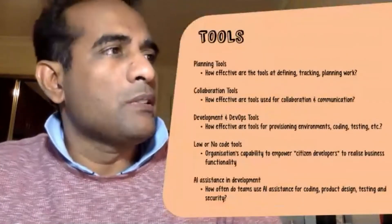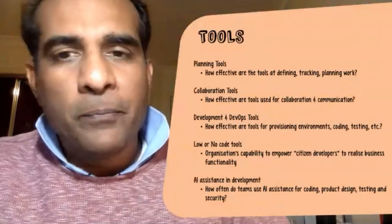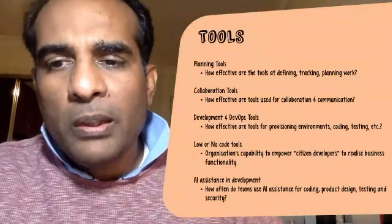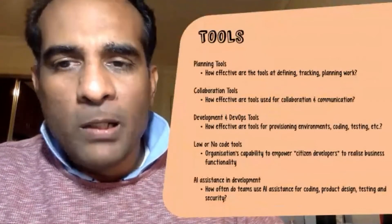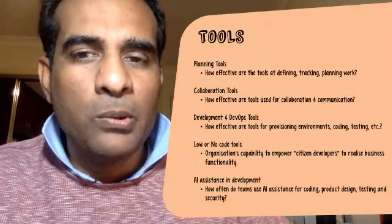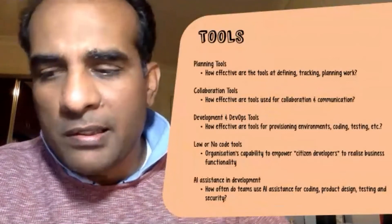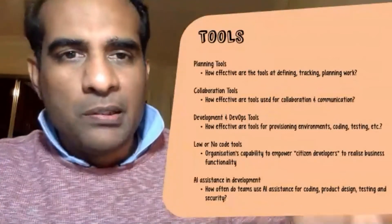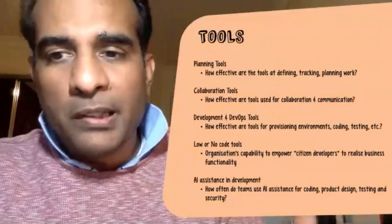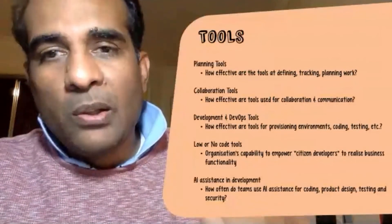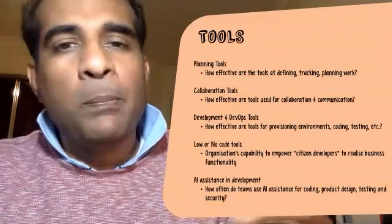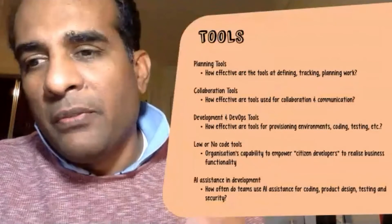One of the other important things is around tooling. How good is your developer tool chain? The developer tool chain is not just your Visual Studio or Visual Studio Code — it's a lot more than that. They should have good planning tools; for example, at AGL we use things like Jira.